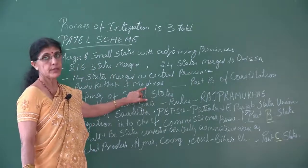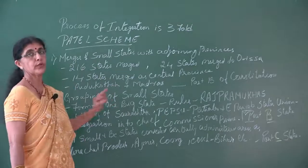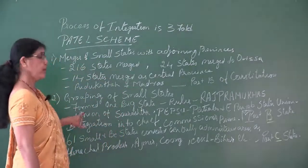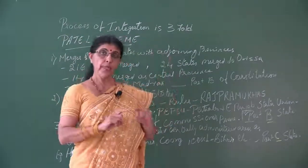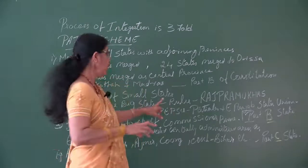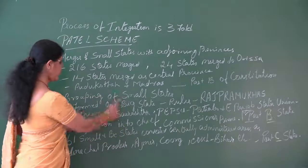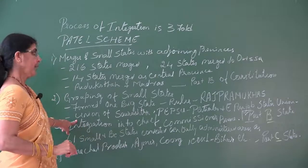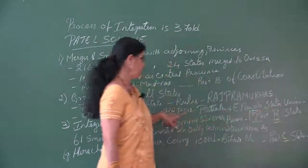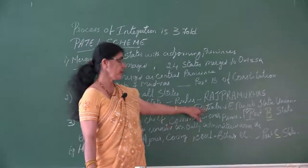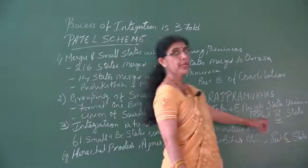Pudukottai was included in Madras, and these merged states were included in the constitution as Part B. The second method was the grouping of small states, where all small states came together to form one big state. The ruler of the largest among those small states would be made the Rajapramukha — the head of the combined big state. For example, the Union of Saurashtra and the Patiala and East Punjab States Union, also called PEPSU. These states were called Part B states.